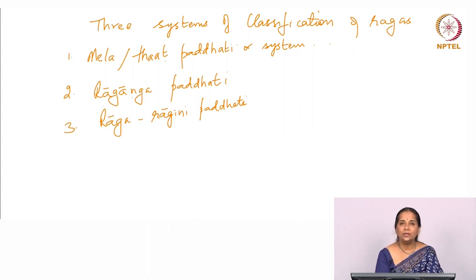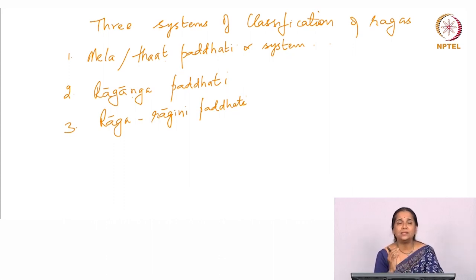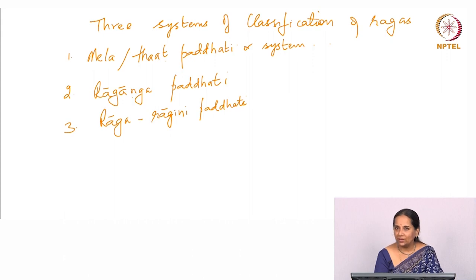Of these, the Raga Ragani Paddhati is of historical interest only — it is quite obsolete and nobody uses it today. The other two — the Mela Paddhati and the Raganga Paddhati (Paddhati means 'system') — are the two prevalent systems of classifying ragas.